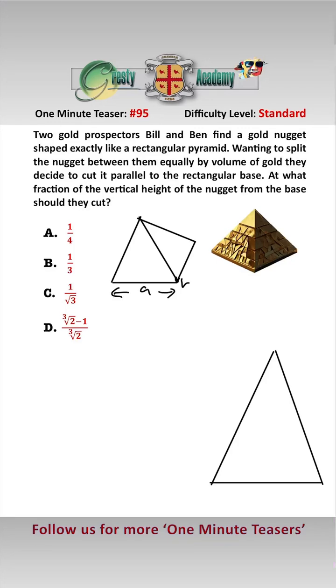Let's let the dimensions of our golden nugget rectangular pyramid be A, B, and the vertical height between the tip and the rectangular base be H. Then the volume of our golden nugget is ABH over 3.